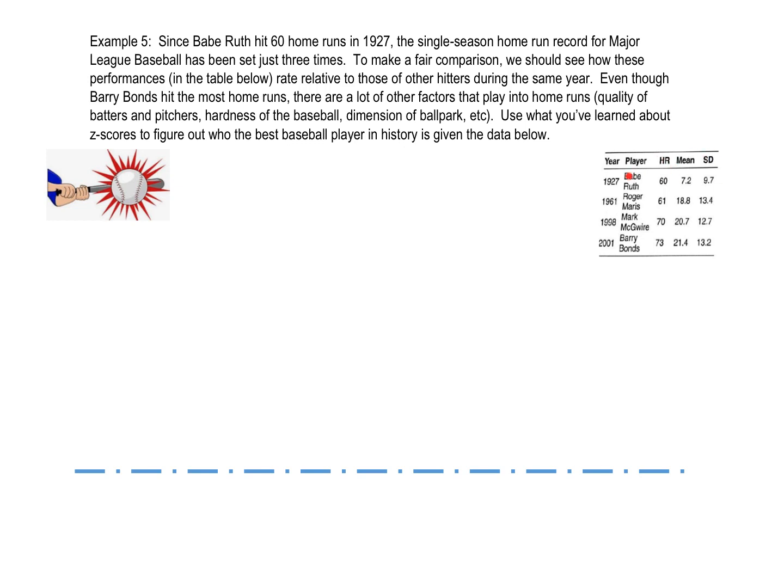We have their number of home runs with their mean and their standard deviation for that season. We've got Roger Maris, Mark McGwire, and Barry Bonds. So what the question is, in order to make a fair comparison, we need to look at how these baseball players actually compare to the other players in their season. So why would it not be fair to compare Babe Ruth from 1927 all the way up to Barry Bonds, who's 2001?